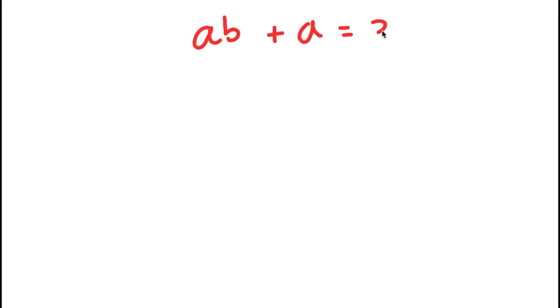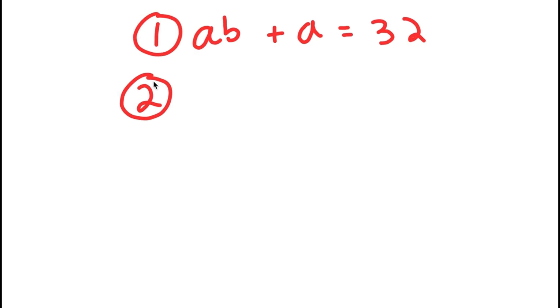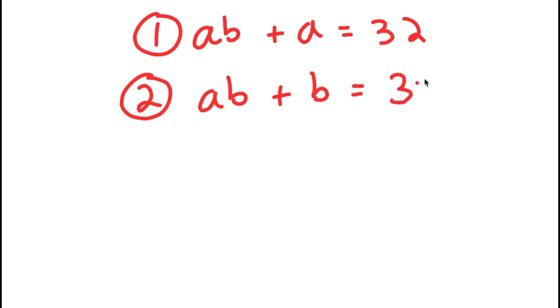Alright, so in this video I'm going to be solving a system of equations. In my system of equations I have two equations. My first is AB plus A is equal to 32, so this is going to be my first equation. And my second equation is going to be AB plus B is equal to 35.